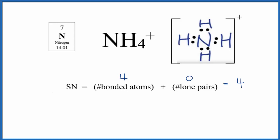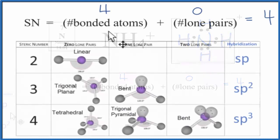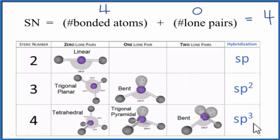So with the steric number of four, we can look it up on this table here and see the steric number of four, we're going to have sp3 hybridization. So the hybridization on the central nitrogen here in NH4 plus, that's sp3.